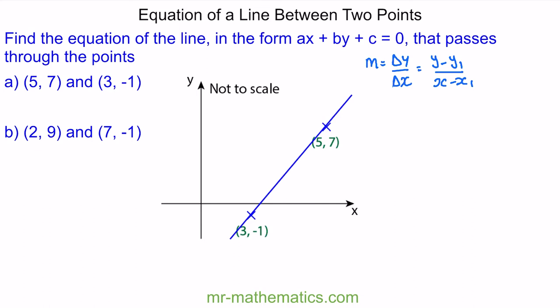We'll substitute these values into our equation, so m is equal to 7 minus negative 1 over 5 minus 3, which is 8 divided by 2, so our gradient is 4.